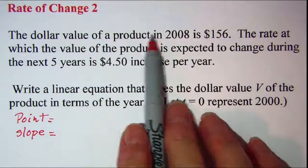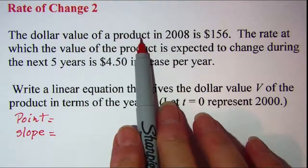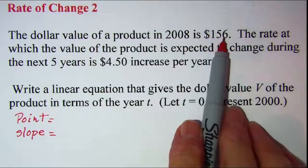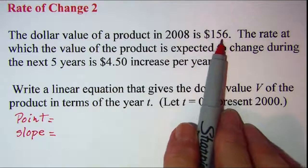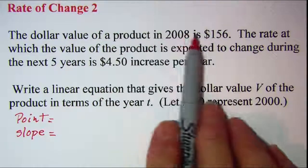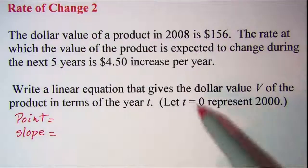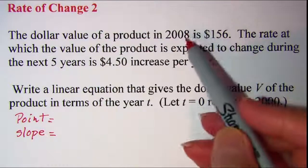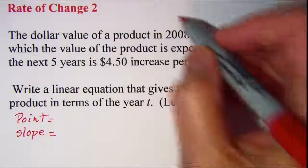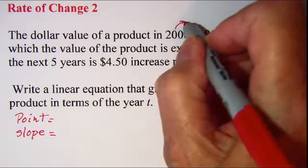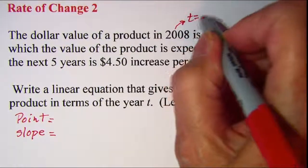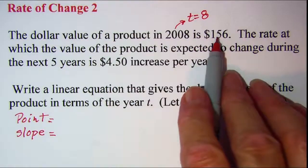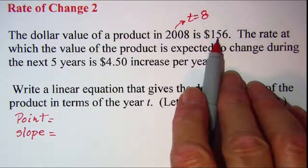This first sentence tells us that the dollar value of a product in 2008 is $156. So this is going to give us our point. Since t equals zero represents 2000, then 2008 tells us that t is equal to 8, and then this is our value in 2008.